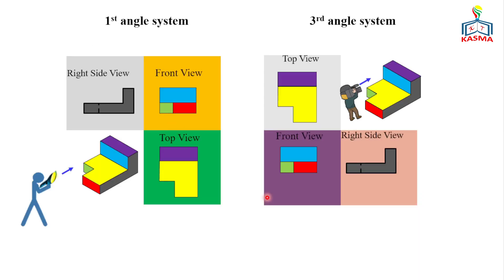Comparing the two systems: in the first angle projection, the right side view is placed on the left of the front view, and the top view is placed at the bottom. In the third angle projection, the right side view is on the right, and the top view is on the top. In third angle, views are placed in their natural order — top on top, right on right, left on left, bottom on bottom. In first angle, the top is on the bottom and the right is on the left.